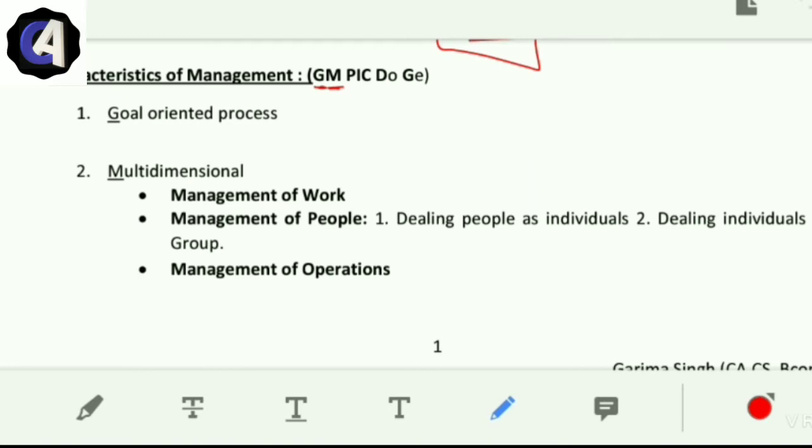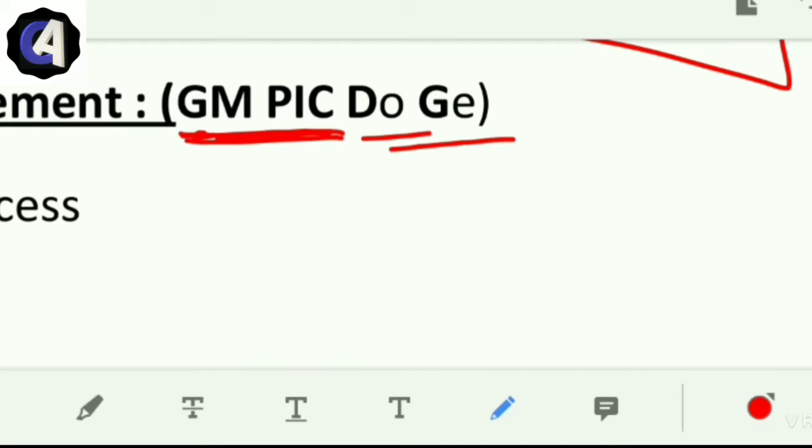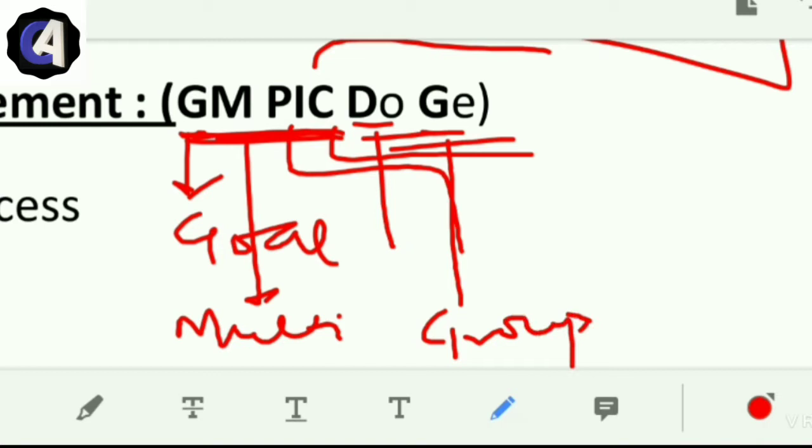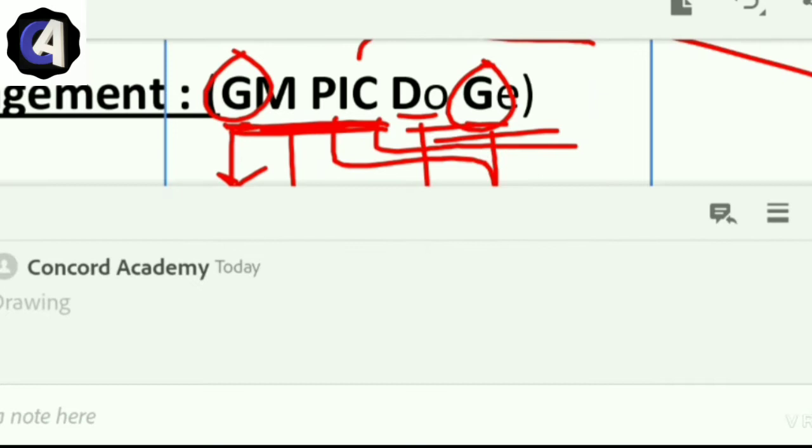Now we'll see characteristics or features of management. We have made a memory technique for this: GM PICK DOGE. You can remember it as 'good morning pick'. G means goal-oriented process, M means multi-dimensional, P means pervasive, I means intangible, C means continuous function, D means dynamic, and G means group activity. There are two Gs - one for goal-oriented process and one for group activity.